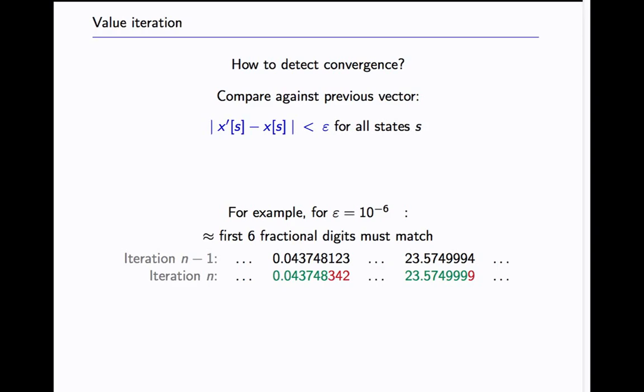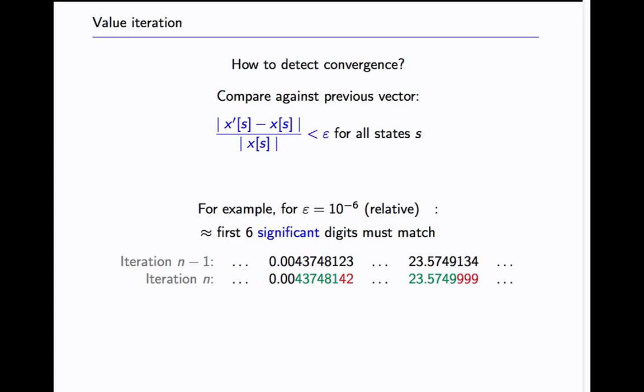For example if you use an epsilon of 10 to the power of minus 6 you terminate when the first six fractional digits in your elements match. There's a variant relative comparison. Basically you scale the comparison by the magnitude of the values and this has the effect that for values that are less than one you get more precision. For larger values that occur when you do reward computations you only consider the first six digits. It's known that this doesn't provide guarantees this termination, that you have actually converged on the real result. It's nevertheless used in practice because it tends to work out fine most of the time.